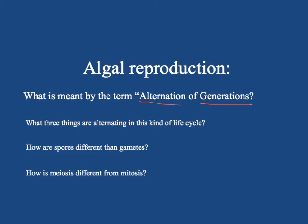Algae literally do alternate generations, having one kind of form in one generation and then the next generation actually looks different in many of the algae. The three things that are alternating in this kind of life cycle include the chromosome number — 2n and 1n — those alternate, the mode of reproduction whether it's asexual or sexual, and whether or not the form is the sporophyte form or the gametophyte form.